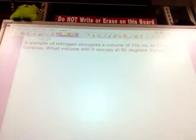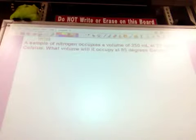Now let's do the second problem. And the second problem says a sample of nitrogen occupies a volume of 250 milliliters at 25 degrees Celsius. What volume will it occupy at 95 degrees Celsius? So again, I need to ask, what variables am I relating in this problem? I have volume and I have temperature.